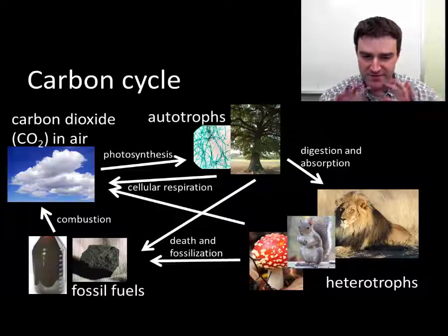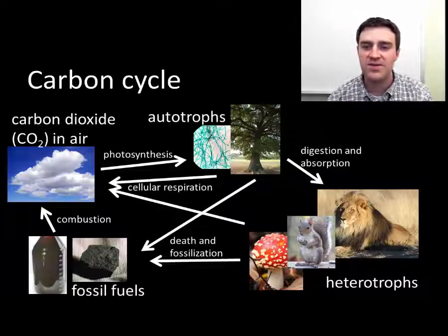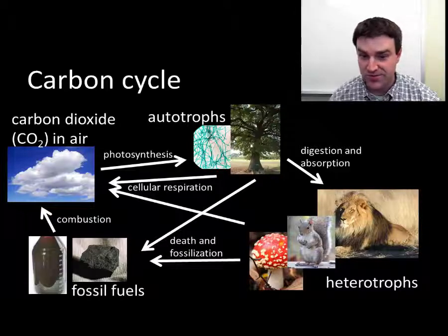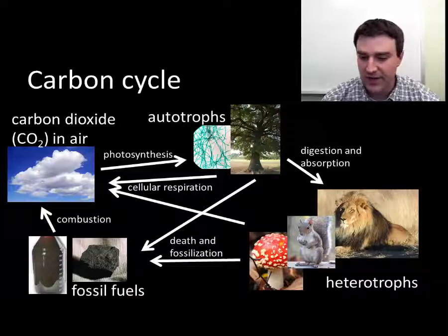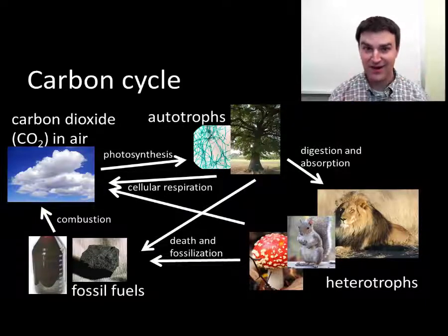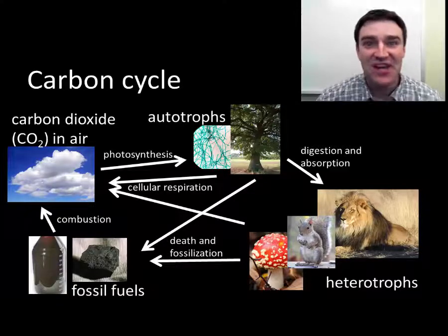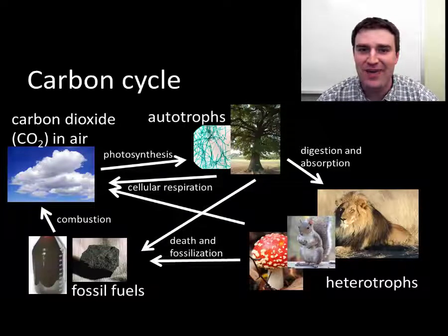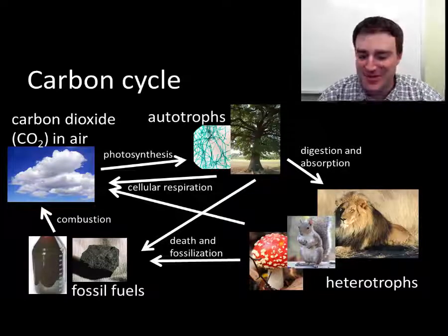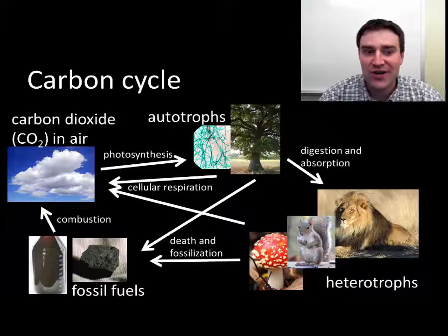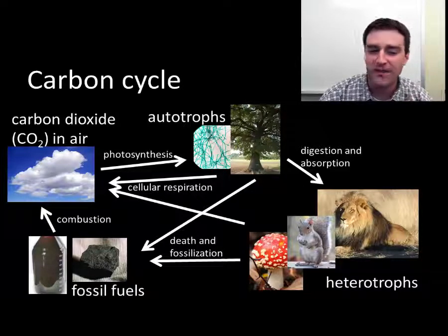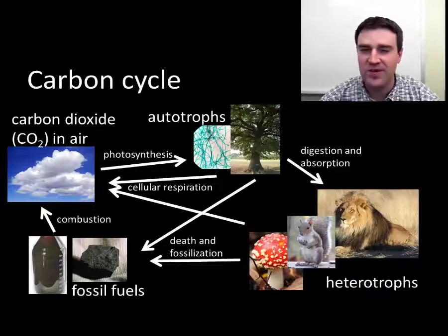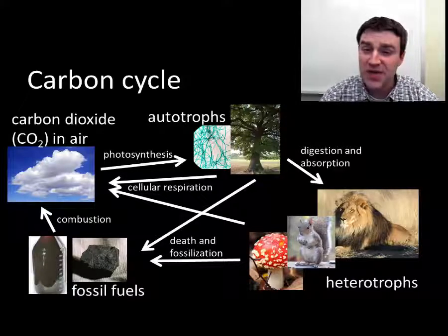Looking at the overall carbon cycle diagram — we're going to go through it piece by piece — what I'd really like you to take away is how carbon might move from source to source. Notice that there aren't arrows going everywhere. For example, we heterotrophs cannot simply take carbon dioxide out of the air. I can't just inhale a lot of air and build muscle — as far as I'm aware, that's not possible. So don't draw an arrow from the air to us heterotrophs. You should be able to tell me which way the arrows go, the name of the conversion process, and what form the carbon broadly takes.